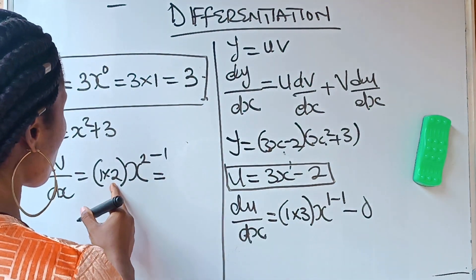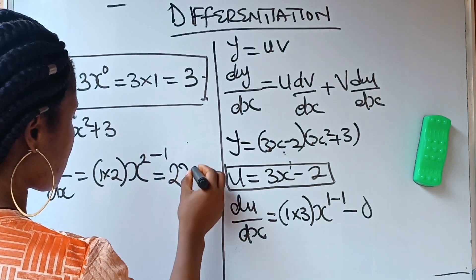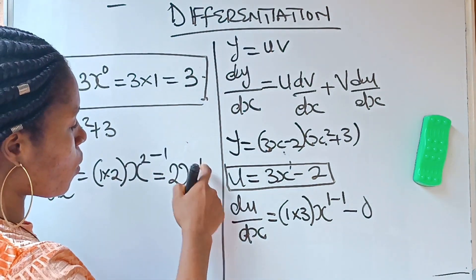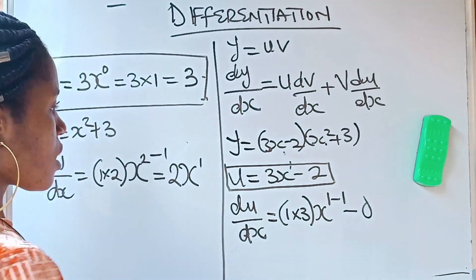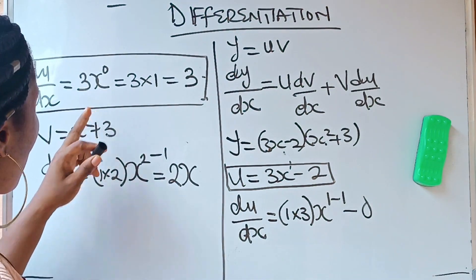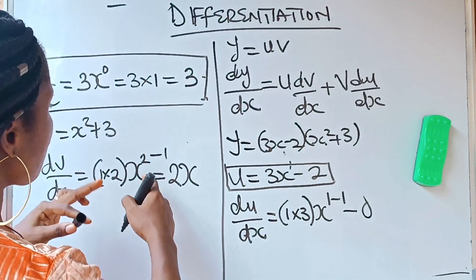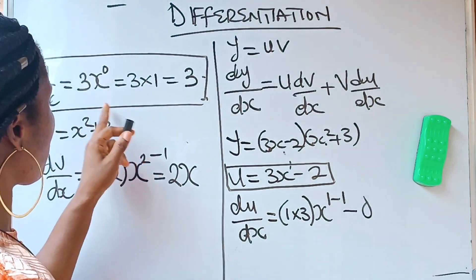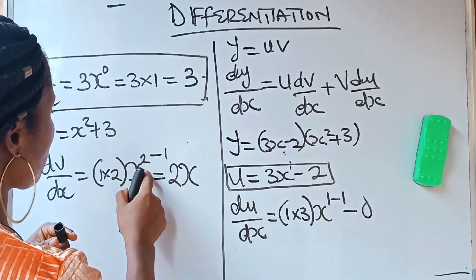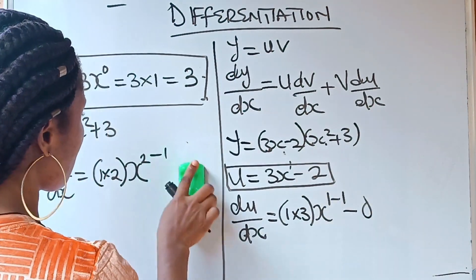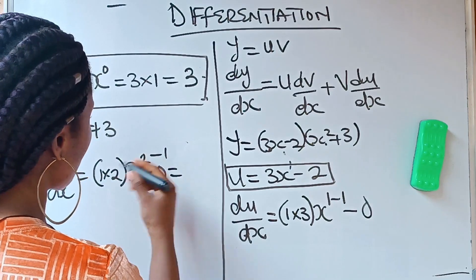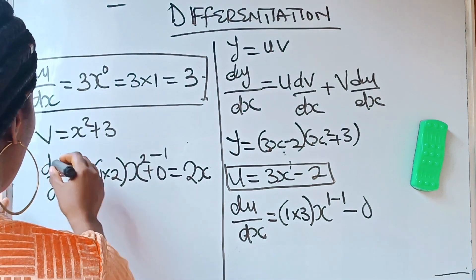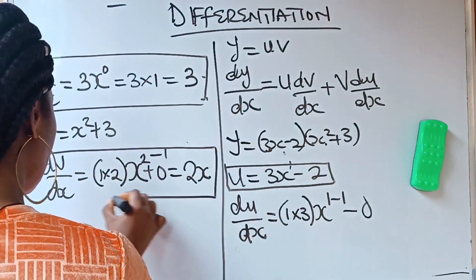1 times 2 gives you 2, write your x, then 2 minus 1 is 1 — no need to write the power of 1 since x to the power of 1 is x. So when you differentiate x squared you get 2x. When you differentiate the constant 3 it gives zero. So dv/dx equals 2x.